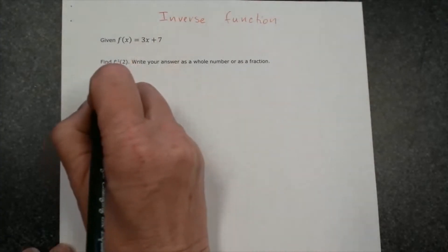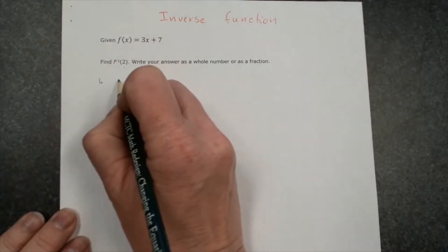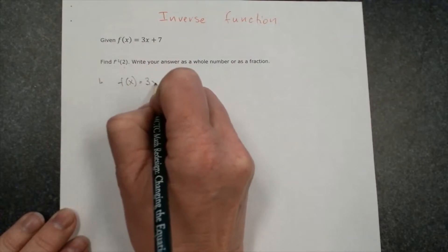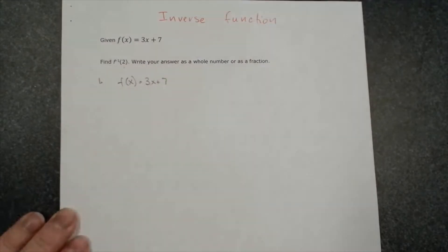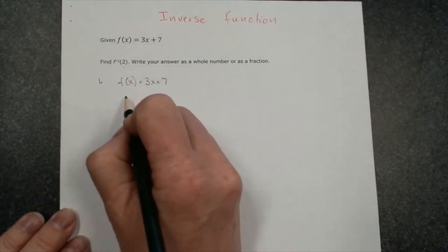So first of all, we need to find the inverse function. We have f of x equal to 3x plus 7. Step 1, we will replace f of x by y.